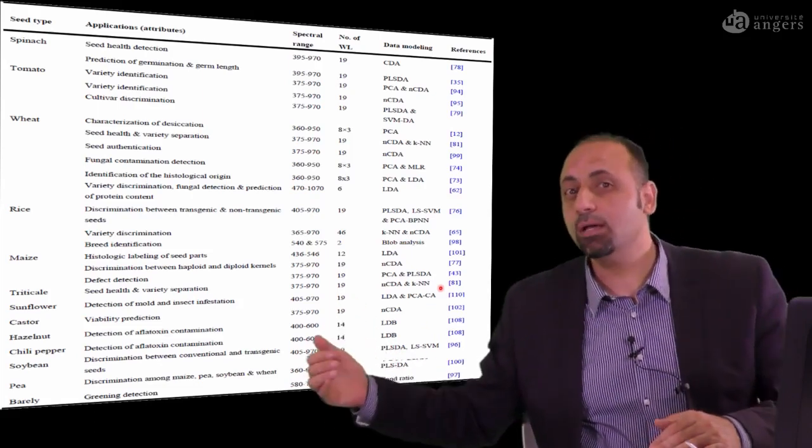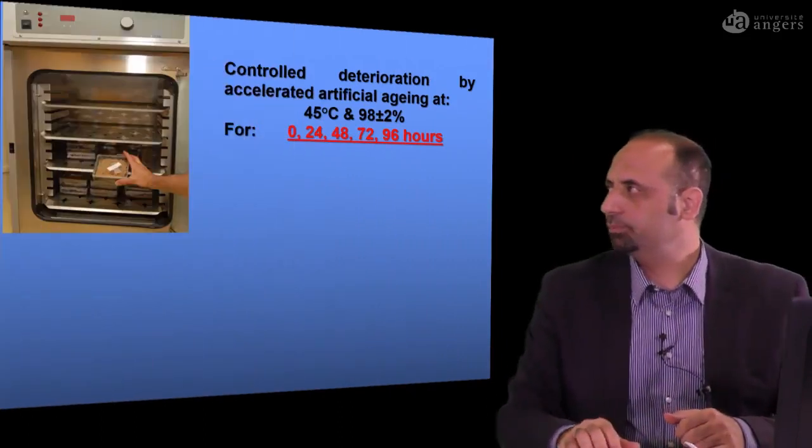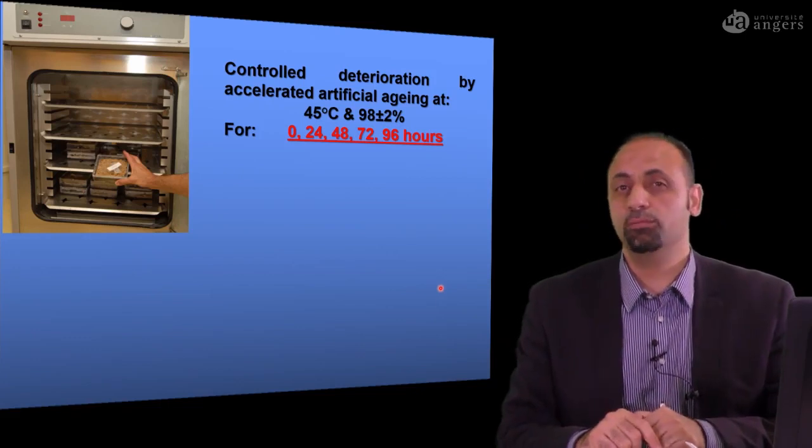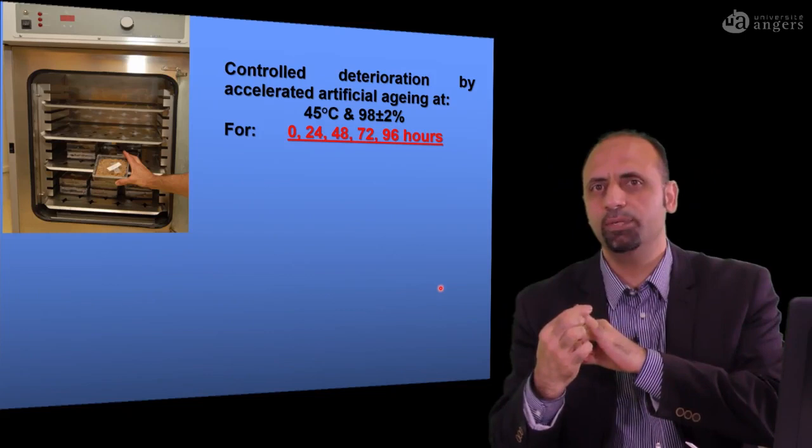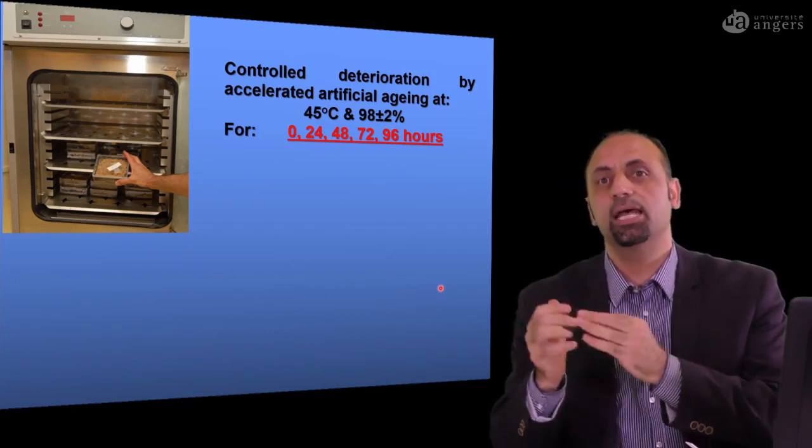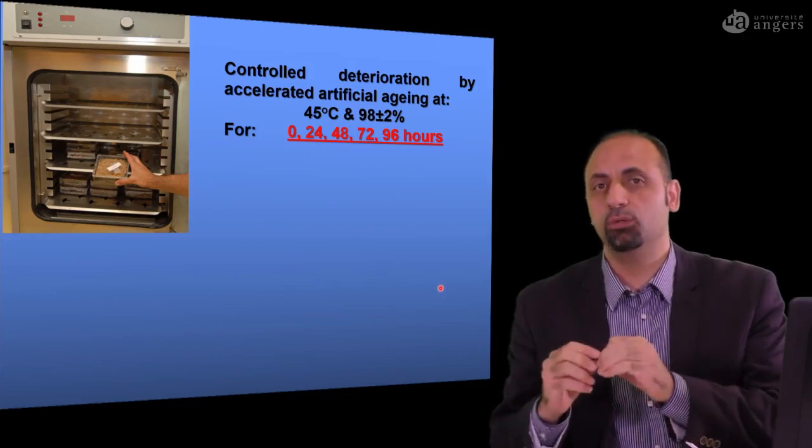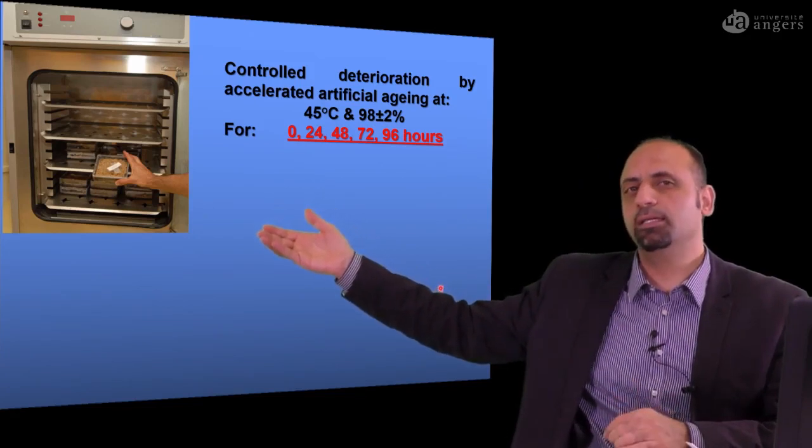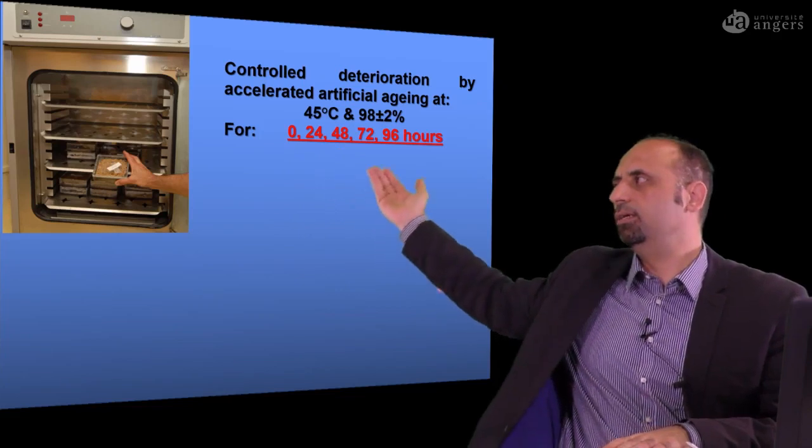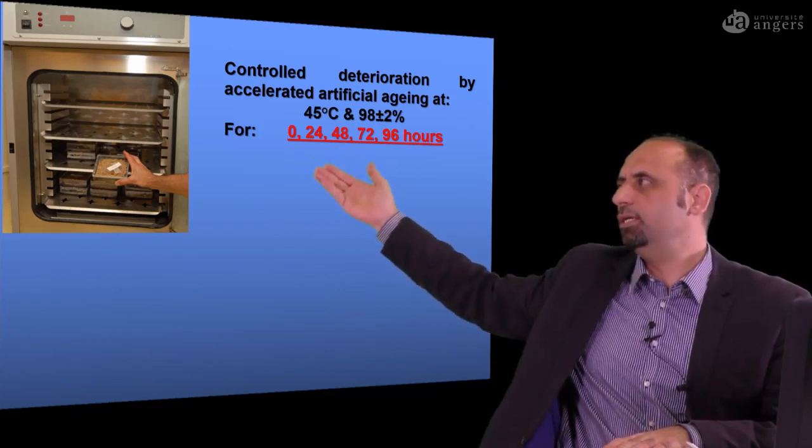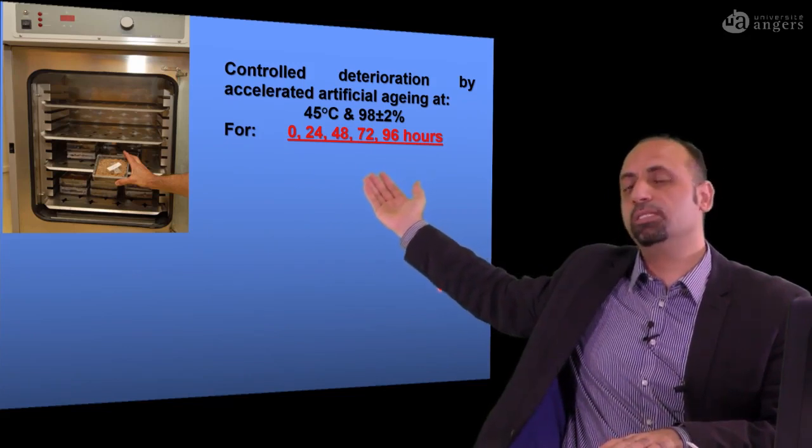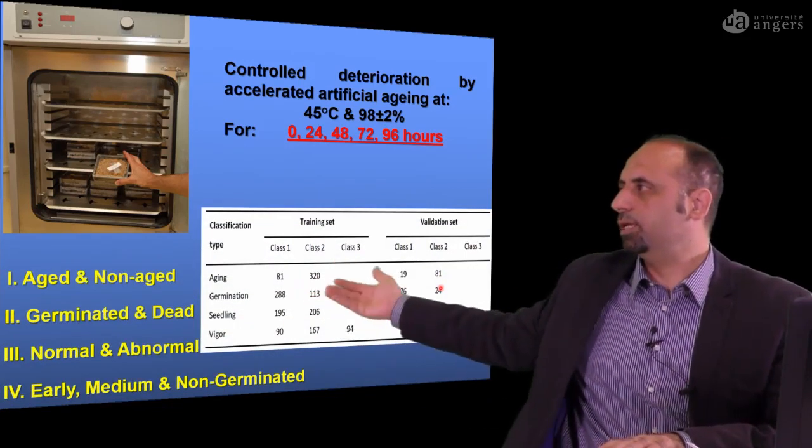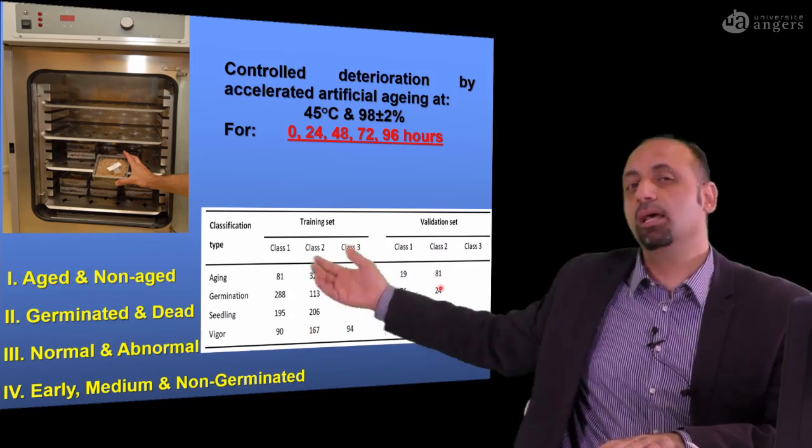If you remember the scenario of analyzing multispectral imaging, you need three modules. You need to acquire a high-quality image. You need to extract the data. And you need to build the prediction model. So our idea is to try to mimic seeds of different quality. We age the seeds at different stages, starting from zero day, the control, and for seeds aged to 96 hours. And then we divide the seeds to different categories, training sets and validation sets.